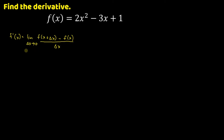So to find the derivative of this, we are going to use this formula. So we have f prime of x equals the limit as delta x approaches 0. So we evaluate f of x plus delta x — this means that instead of x, we are going to use x plus delta x. So x plus delta x will replace the x in the given function.